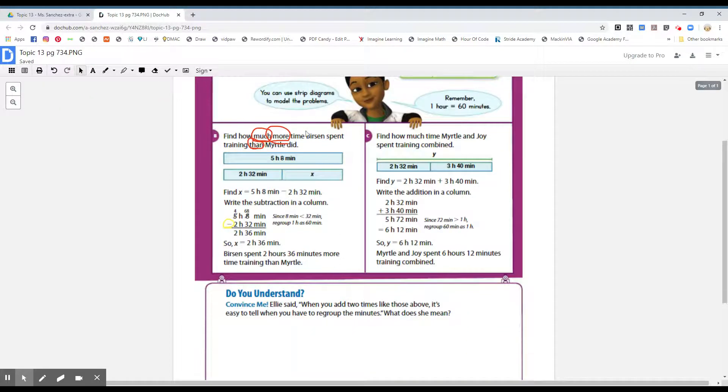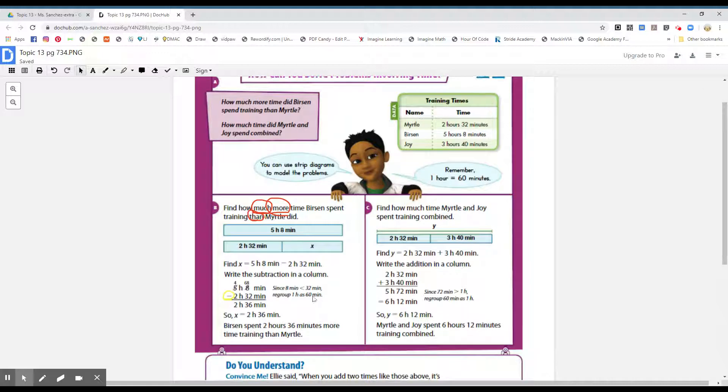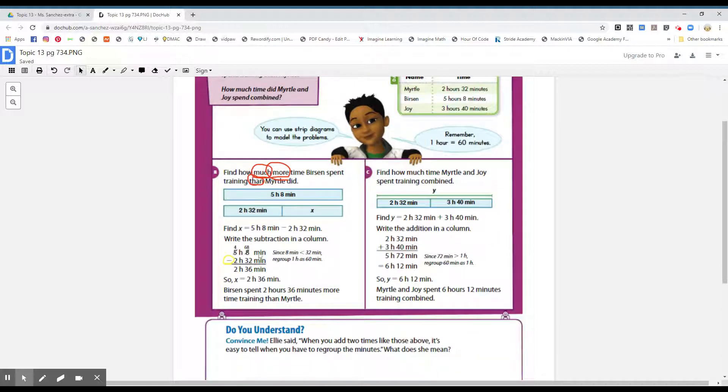But if you see here, boys and girls, Burson was five hours, eight minutes. He's the whole, he's the bigger one, the one that spent more. And Myrtle was two hours and 32 minutes, boys and girls. And they want to know how much the difference. So you would subtract. But when you subtract them, the five hours goes first because five hours is bigger than two hours. And we subtract the big number which goes first.